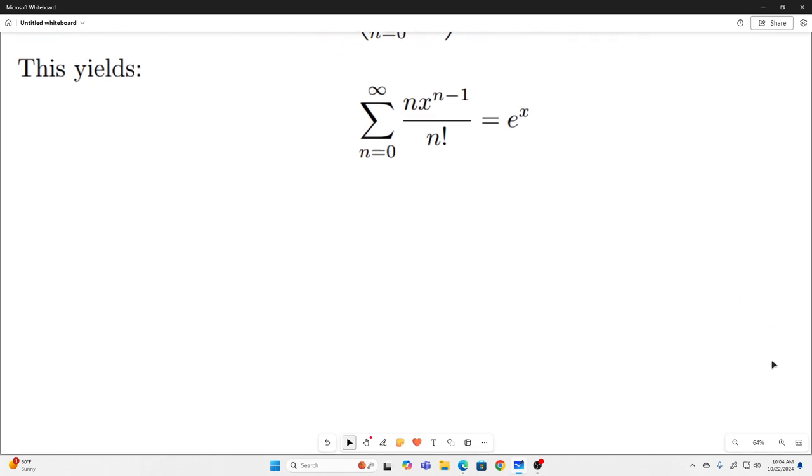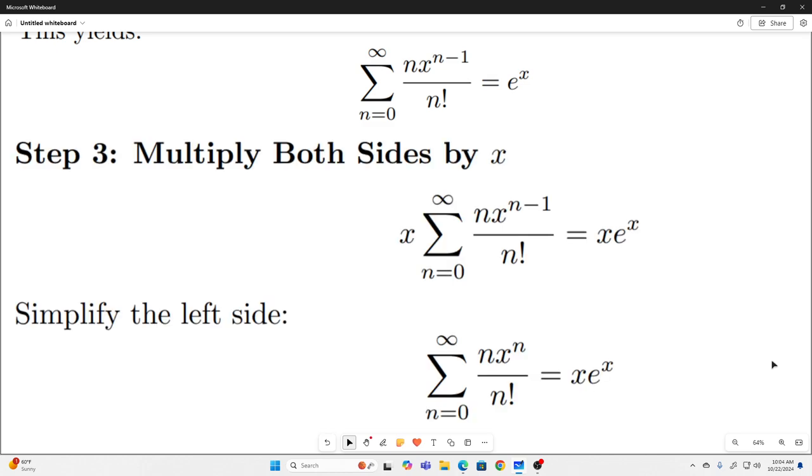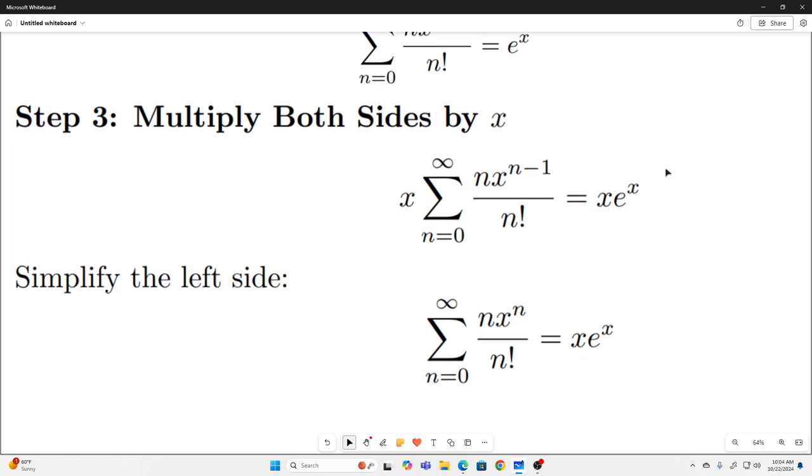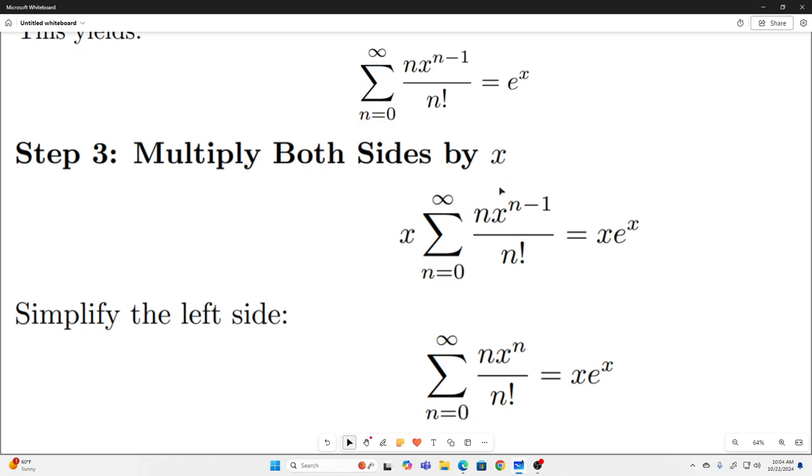So the next step is we're going to multiply both sides of the resulting equation by x and then simplify. So we multiply both sides of this equation by x, giving us just this.